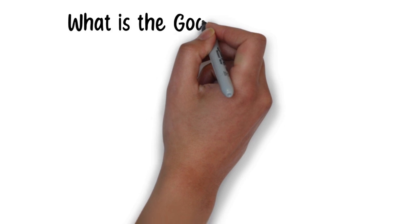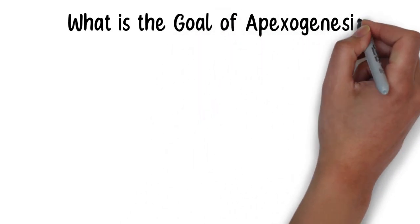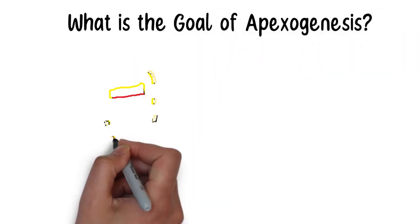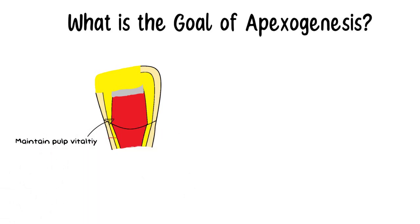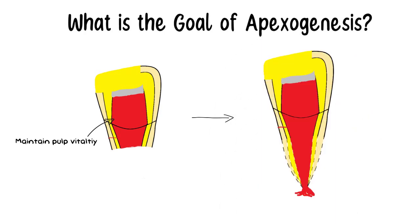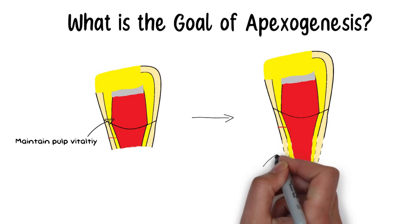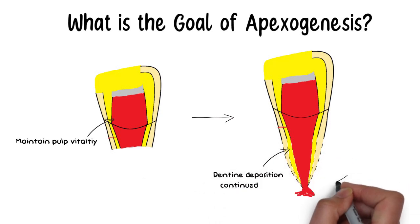So, what is the goal of Apexogenesis? The primary goal of Apexogenesis is to maintain the pulp vitality, therefore allowing dentine formation and root enclosure. By keeping the pulp alive in Apexogenesis, the remaining odontoblasts can continue depositing dentine, increasing the thickness of root dentinal walls and making it less prone to fracture.